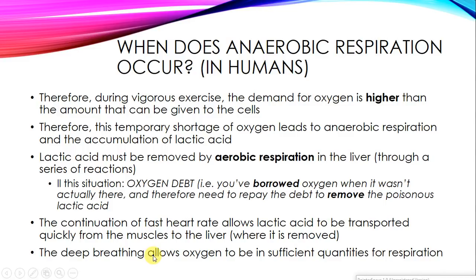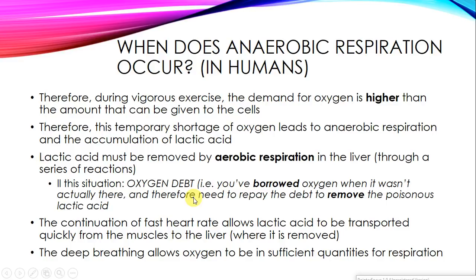After we've finished vigorous exercise, our heart rate continues to beat fast for a while, and our depth of breathing also continues to be quite deep. This continuation of a fast heart rate allows lactic acid to be transported quickly from our muscles to the liver, which is where it's removed using oxygen. Deep breathing allows sufficient oxygen from the air to enter our bodies for aerobic respiration to occur, which is used to remove the lactic acid that is poisonous to our bodies.